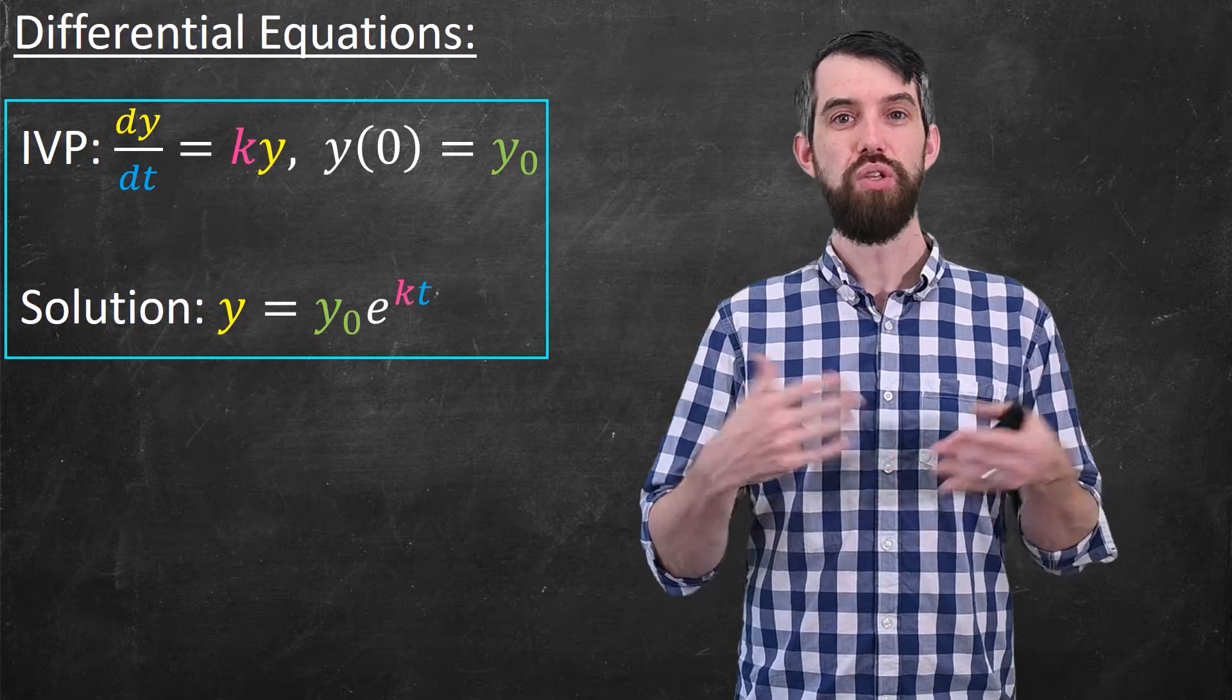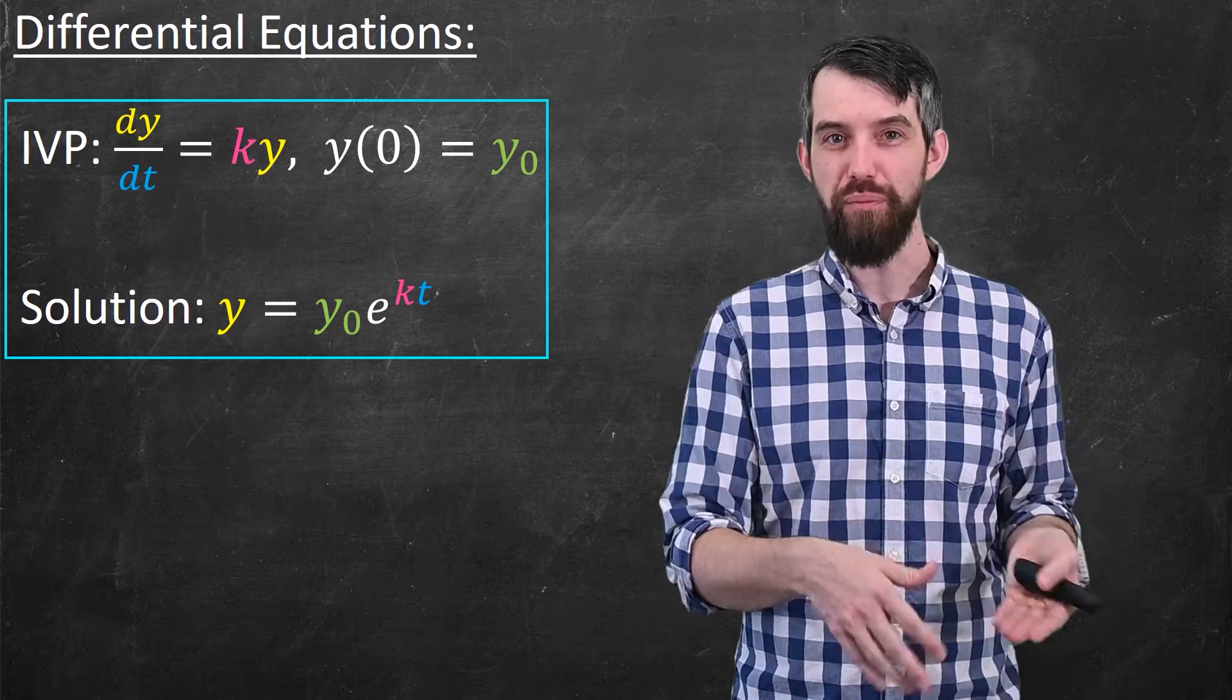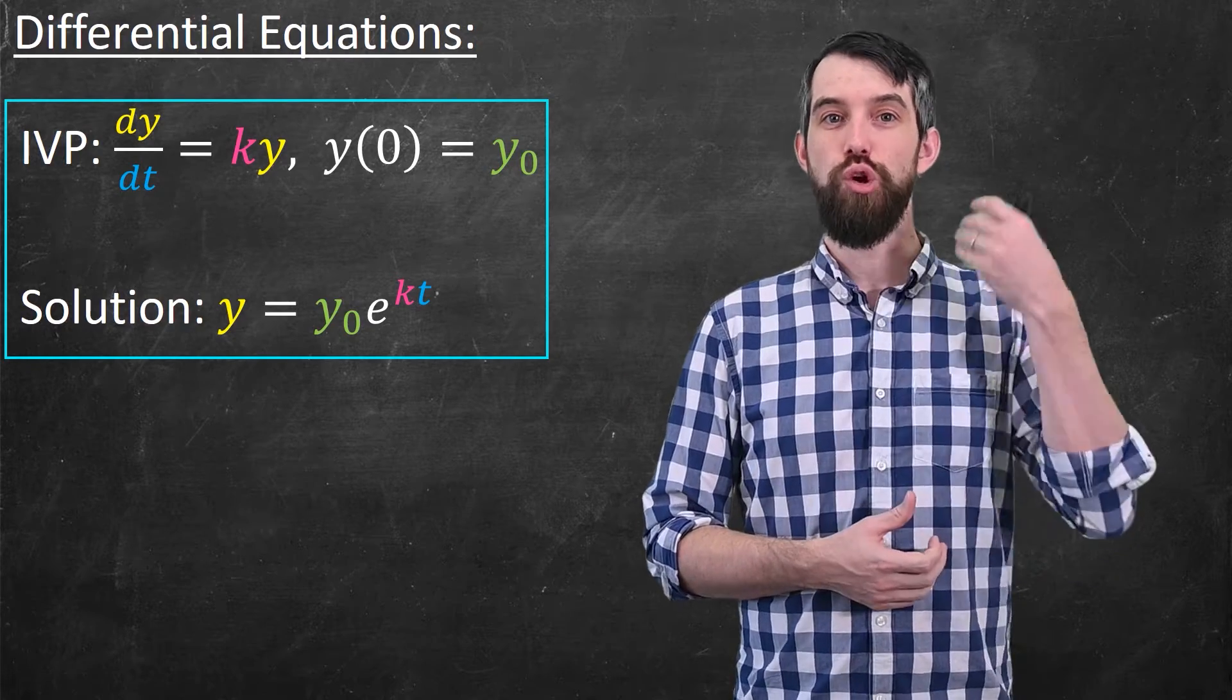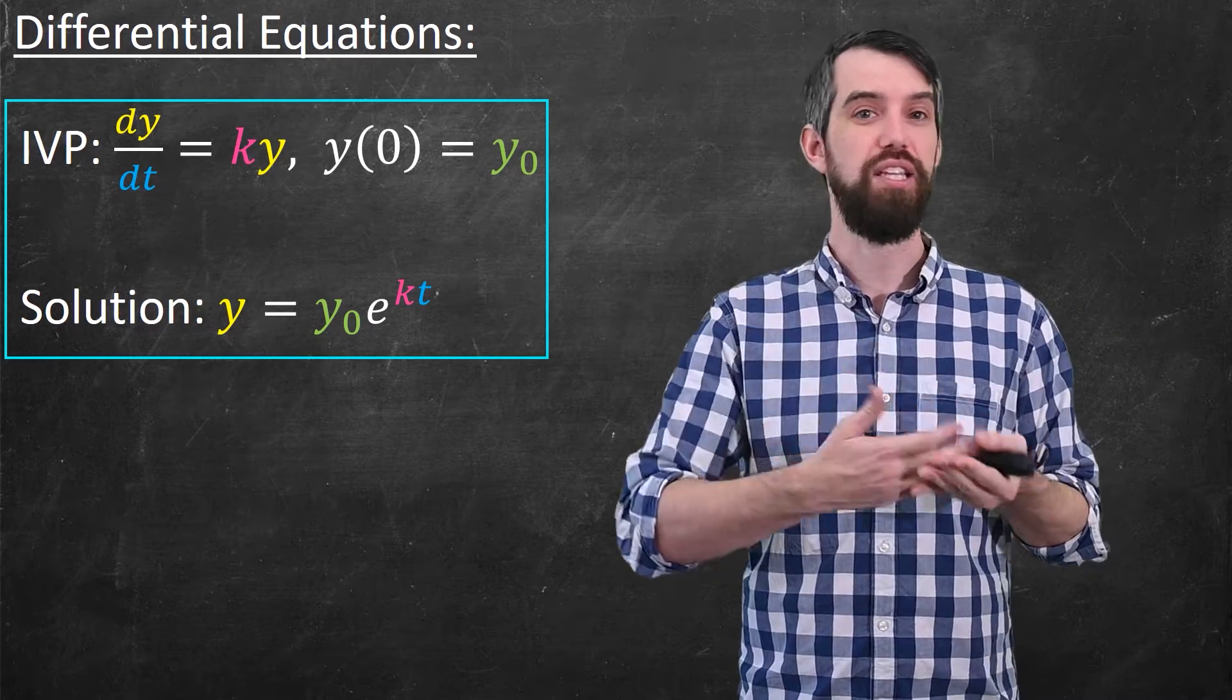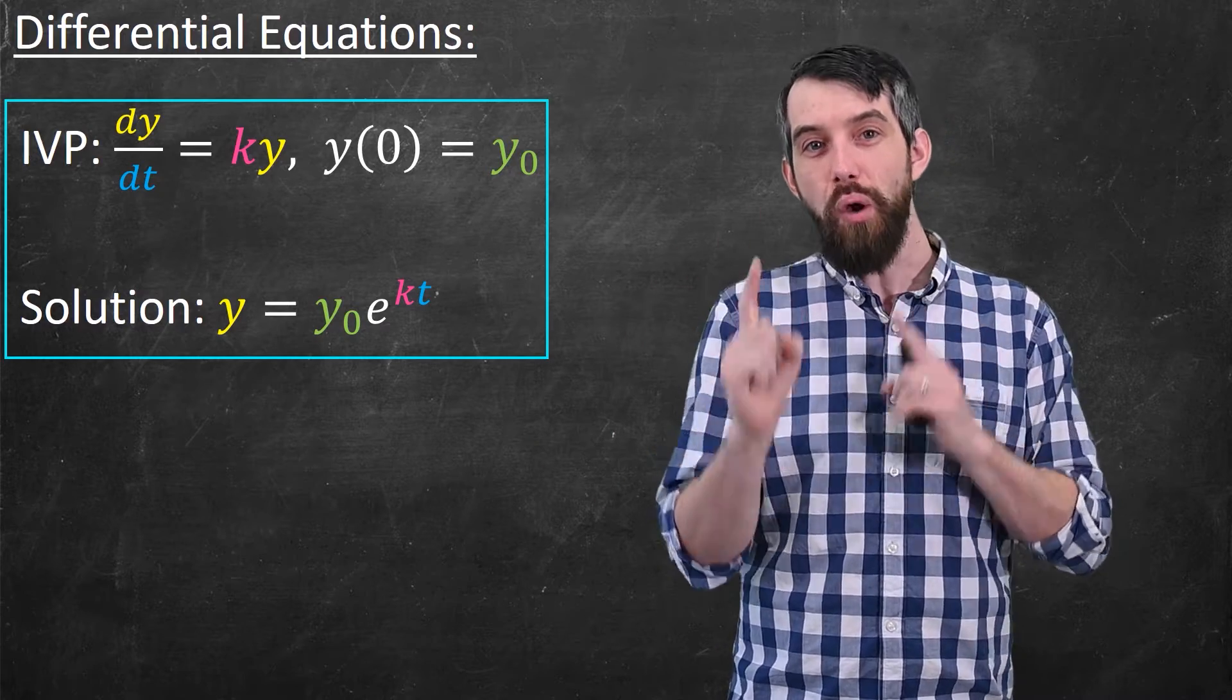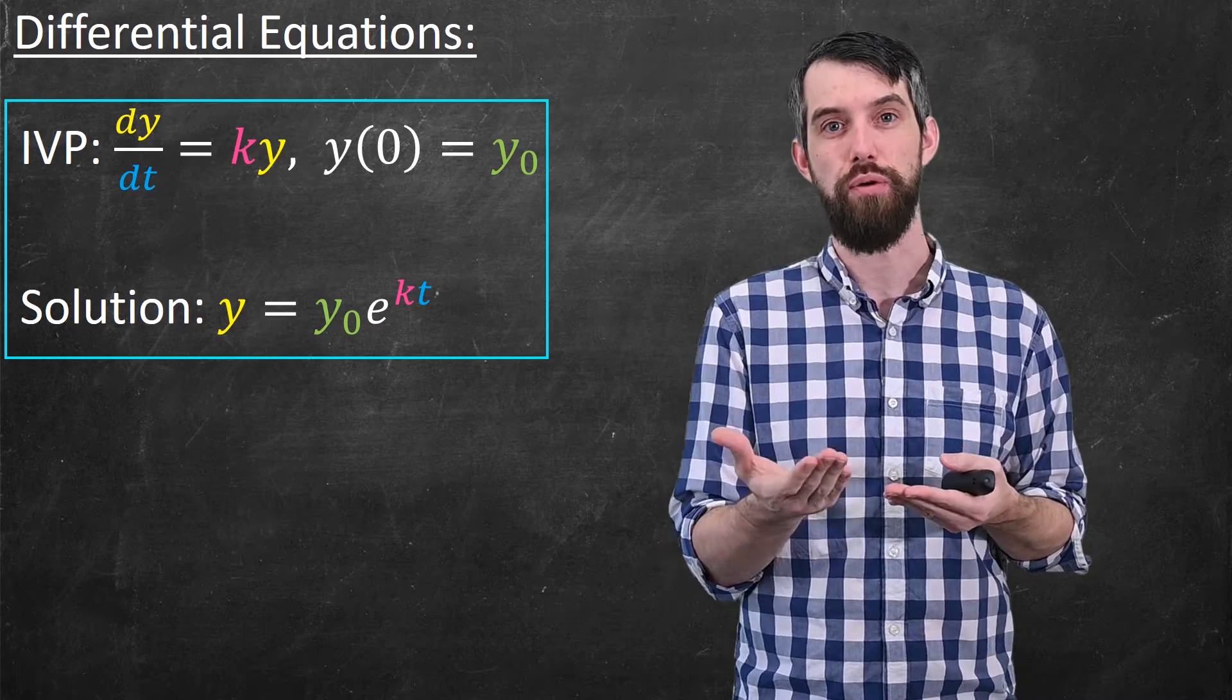So solving this equation is where the exponential growth formulas come from. You begin with a very reasonable relationship that the rate of change is proportional to the quantity, which seems reasonable whether it's the growth of a virus or the growth in your bank account. And then solving that differential equation led to this particular solution, the exponential growth.